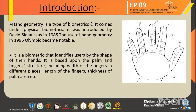Hand Geometry Biometric comes under physical biometric. Hand Geometry was introduced by David Sedlaskos in 1985. In this system, the measurement of the palm is recorded, and measurement is done by measuring the width and length of fingers and thickness of the palm area.